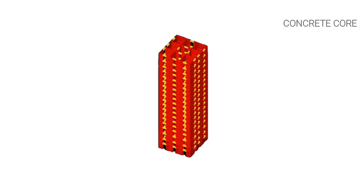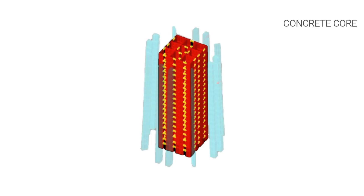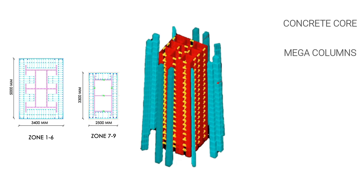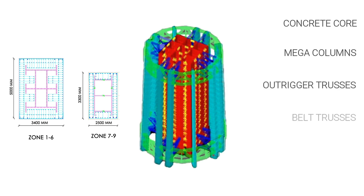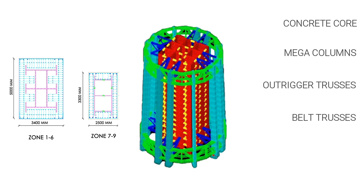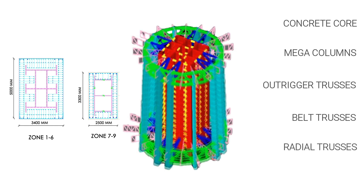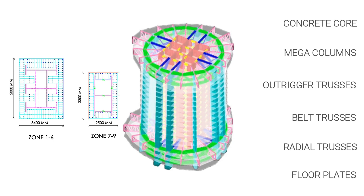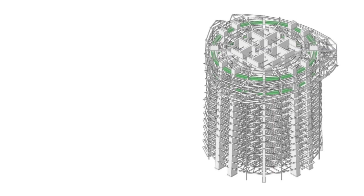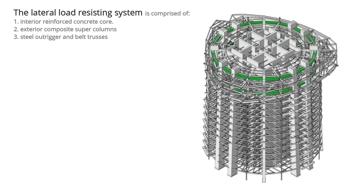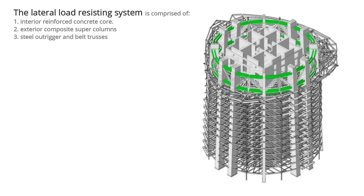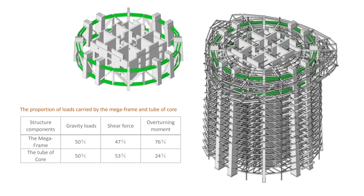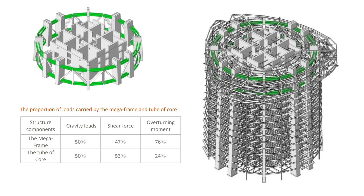The concrete core also interacts with the surrounding mega-columns through two-storey deep outrigger trusses. The system is connected by belt trusses that take the lateral loads on the building. One-storey deep radial trusses are placed to support all the mechanical floors. The lateral load-resisting system is comprised of: an interior reinforced concrete core, exterior composite super-columns, and steel outrigger and belt trusses.